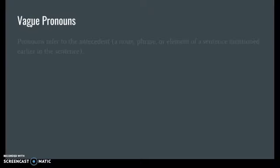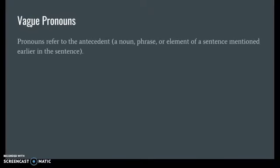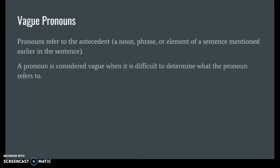A vague pronoun happens when we're not really sure what the pronoun is referring to. A pronoun is supposed to refer to an antecedent, and the antecedent is just a fancy word for the noun, phrase, or element of a sentence mentioned earlier that the pronoun is referring to. So when we can't determine what the pronoun is referring to, that becomes a vague pronoun.